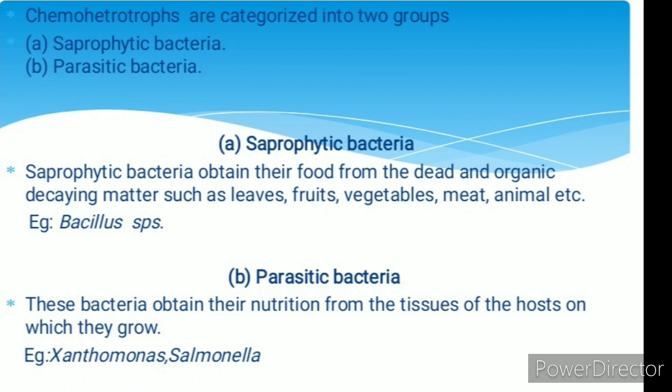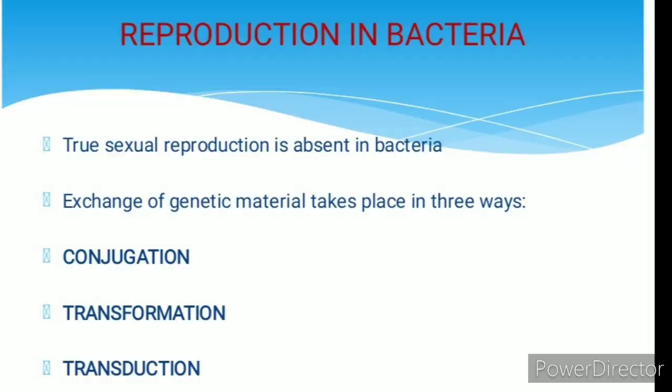Parasites: these bacteria obtain their nutrition from the tissues of hosts on which they grow. Examples of parasitic bacteria are Xanthomonas and Salmonella.